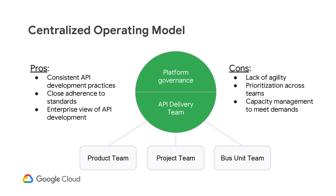A central team defines API development standards and develops APIs based on the requirements from product, project, and business unit teams. This model allows for consistency in development approach and adherence. However, this model lacks the agility that some of the other models have.